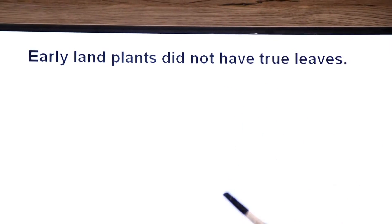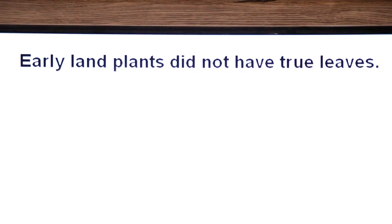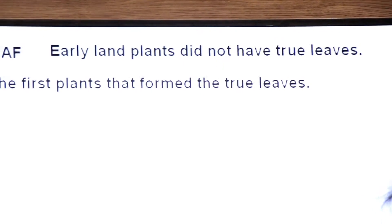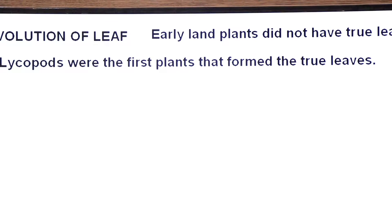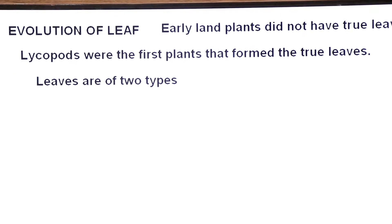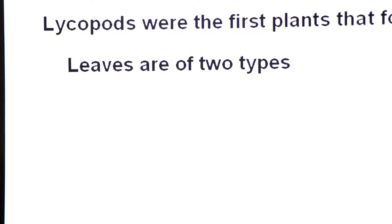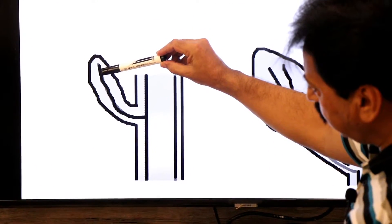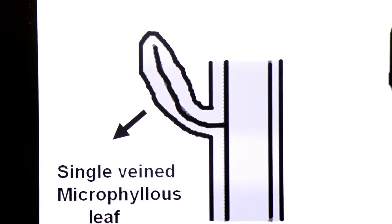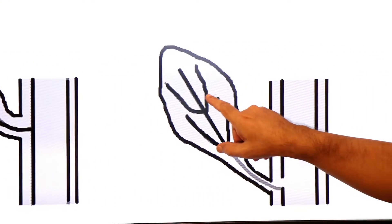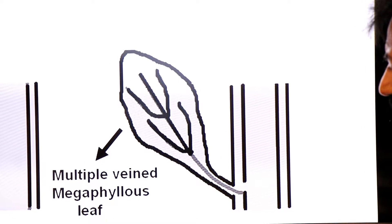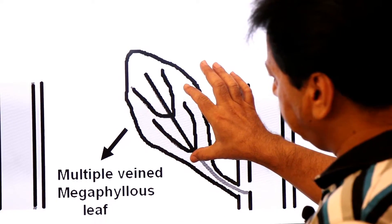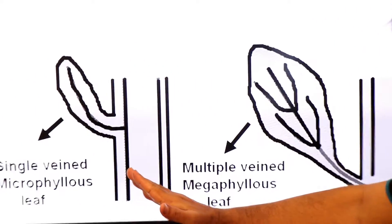Early land plants did not have true leaves. Early vascular plants were not having true leaves. Lycopsids were the first plants that formed true leaves — they developed single-vein leaves. Leaves are of two types: a leaf having a single vein is called a microphyllous leaf, and a leaf having many veins is called a megaphyllous leaf. Veins are made up of xylem and phloem cells.